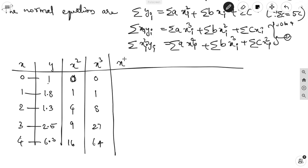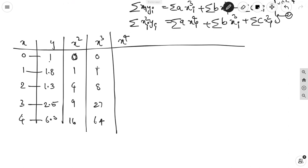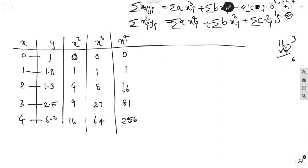Next, x⁴ values are computed as the square of x²: 0² = 0, 1² = 1, 4² = 16, 9² = 81, 16² = 256.